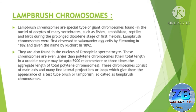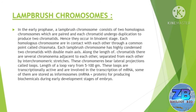These chromosomes consist of a main axis with many fine lateral projections or loops, which give them the appearance of a test tube brush or lampbrush — so called lampbrush chromosomes.